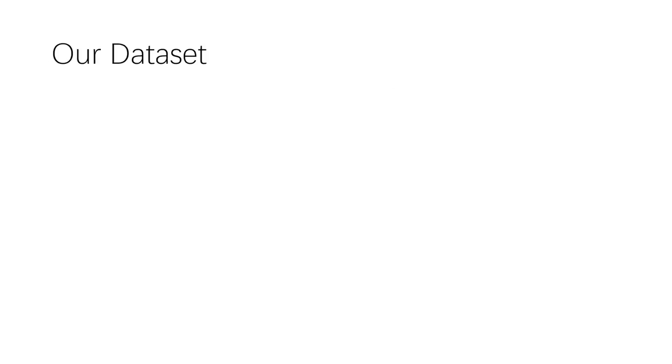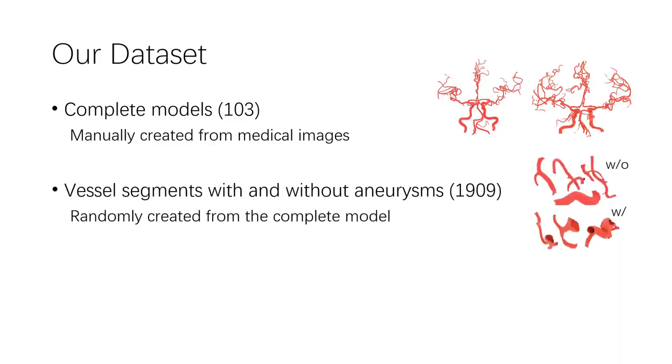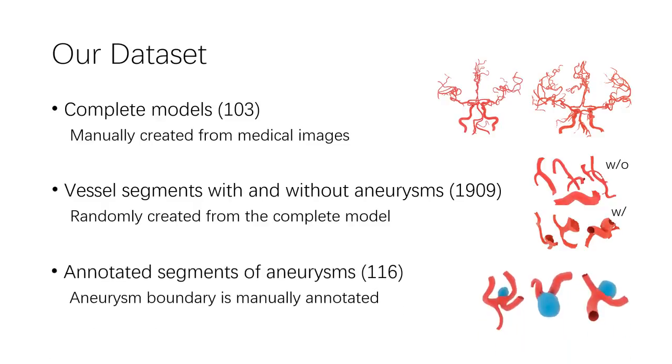Our data set includes three types of models. 103 3D models of entire brain vessels are collected by reconstructing scanned 2D MRA images of patients. 1909 blood vessel segments are generated automatically from the complete models. 116 aneurysm segments are divided and annotated manually by medical experts.